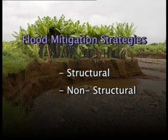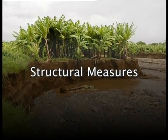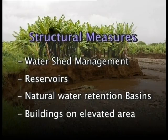Flood mitigation strategies are structural and non-structural. Structural measures are physical measures that help in modifying the flood, while non-structural measures are planning-based and help in modifying the losses due to floods. In structural measures, we keep water away from the people; in non-structural measures, we try to keep people away from the water. Structural measures include watershed management, reservoirs, natural water retention basins, and building on elevated areas.